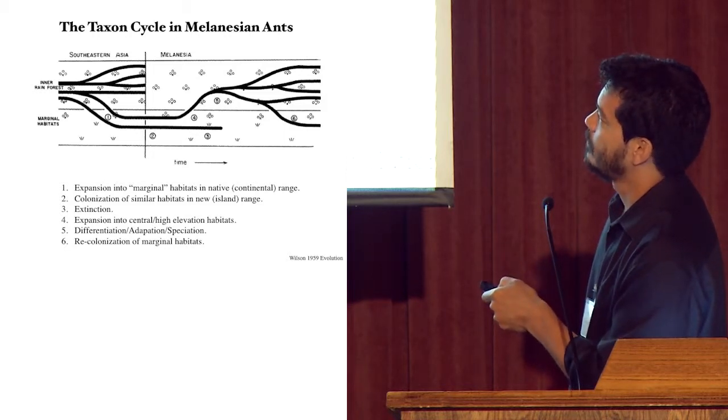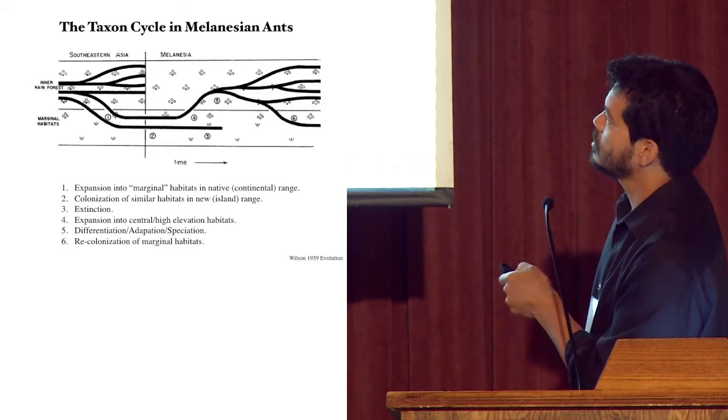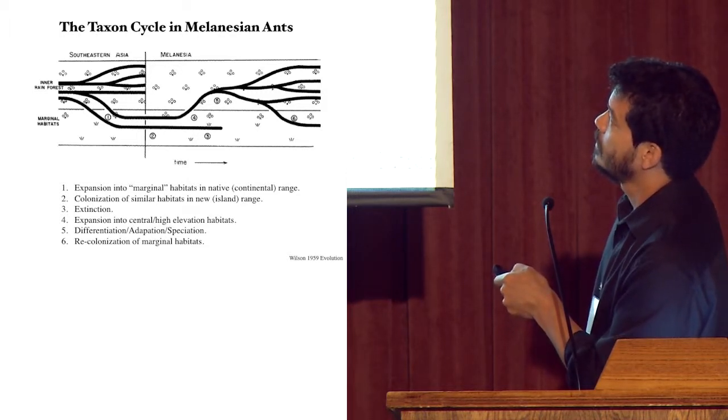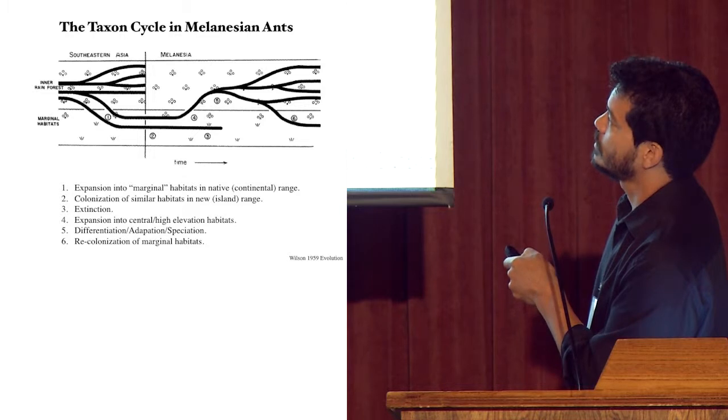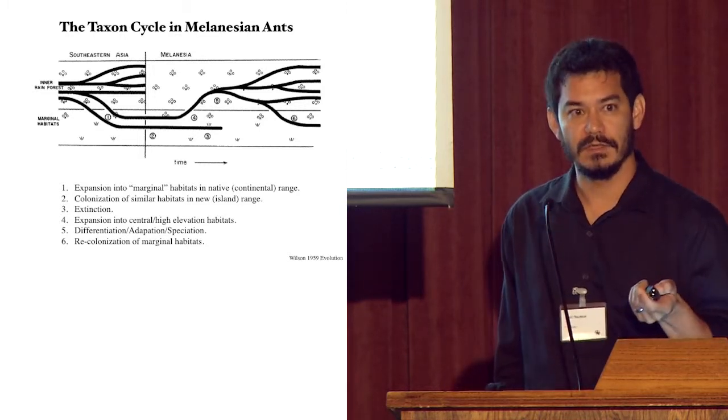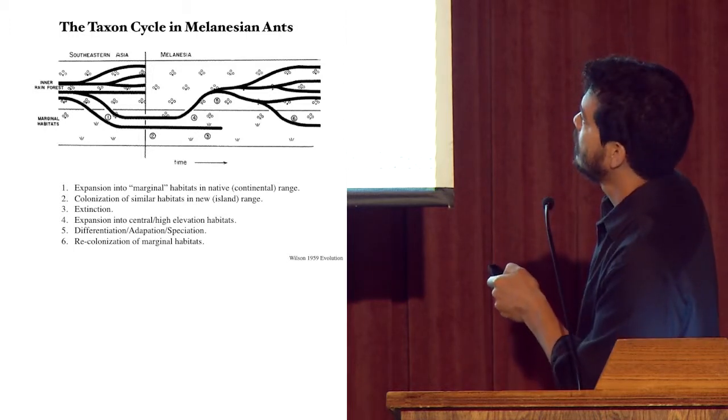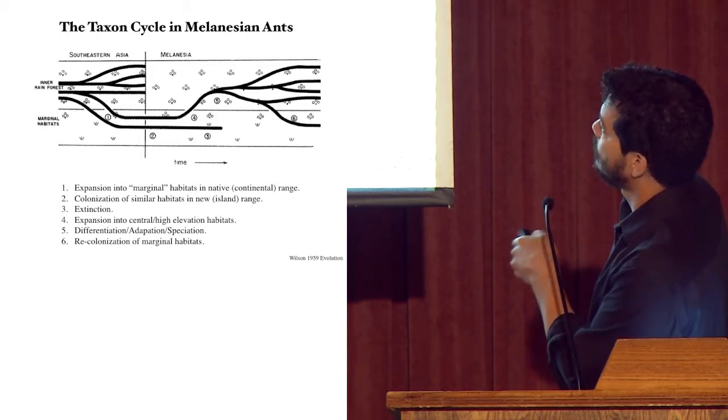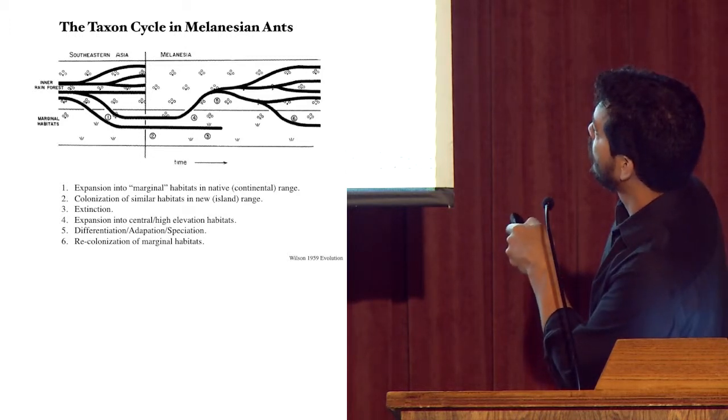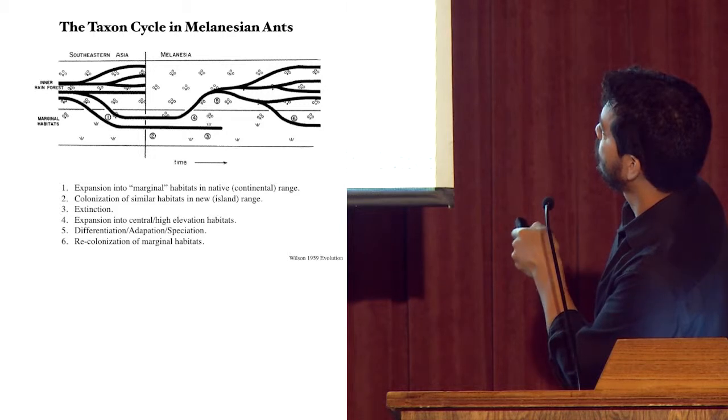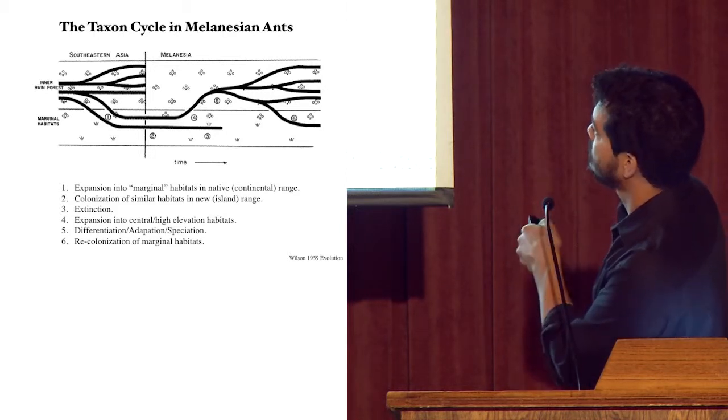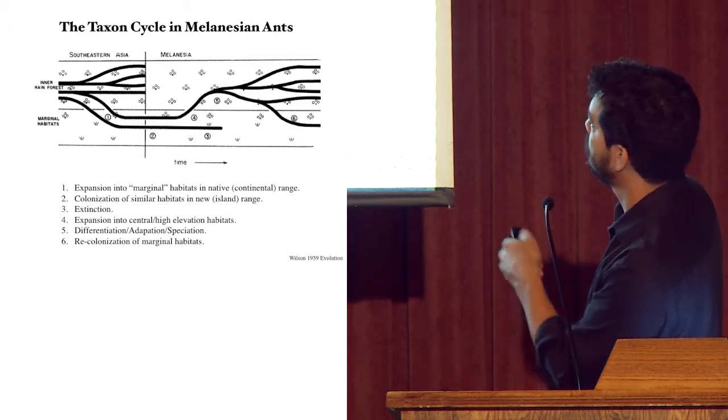And then they're introduced under Wilson's model, under natural mechanisms, but for invasive species nowadays, this is typically human mediated introductions. But by whatever method, they're introduced to similar types of habitats in new parts of their range, shown here. And then a couple different things can happen. They can become established, but then eventually go extinct, shown by this line here. Or if they become established and continue to spread, they'll often now start to spread into more pristine habitats, more high elevation habitats. They become adapted to these new habitats. And then they can go on to speciate within their new range. And then perhaps one or more species may then re-evolve modifications or adaptations to this marginal habitat and go on to colonize other places. And so the taxon cycle continues.